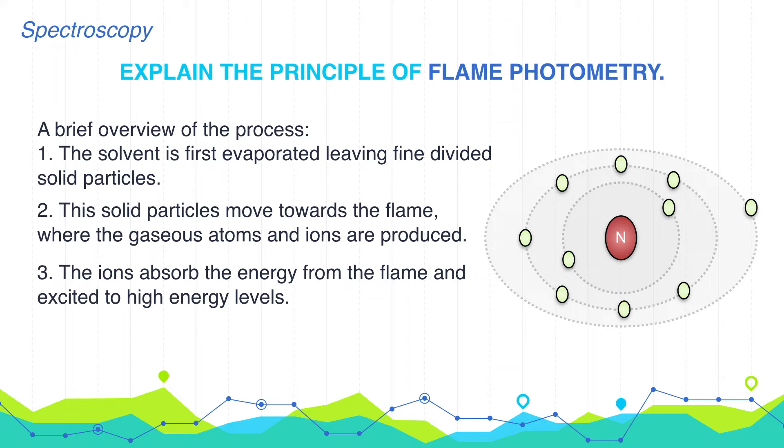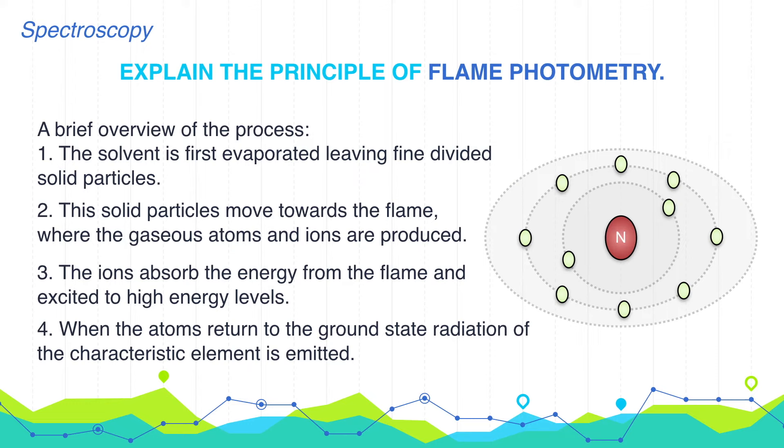When the atoms return to the ground state, radiation of the characteristic element is emitted. The intensity of emitted light is related to the concentration of the element.